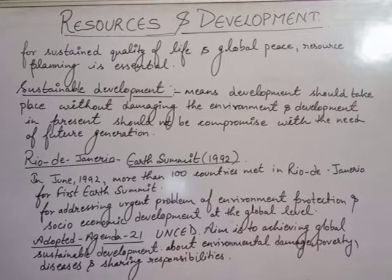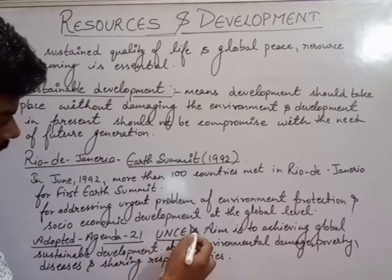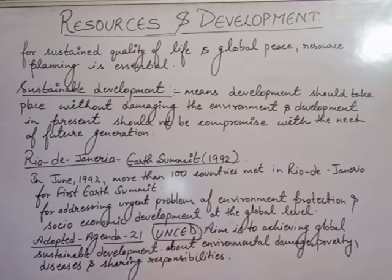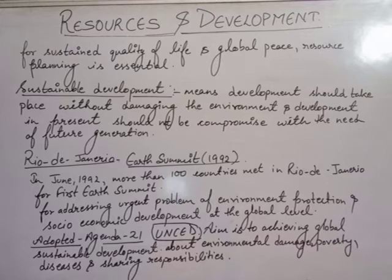Agenda 21 is the United Nations Conference on Environment and Development — UNCED. It is an organization whose aim is achieving global sustainable development by addressing environmental damages, poverty, and diseases, and sharing responsibility among nations at the global level.